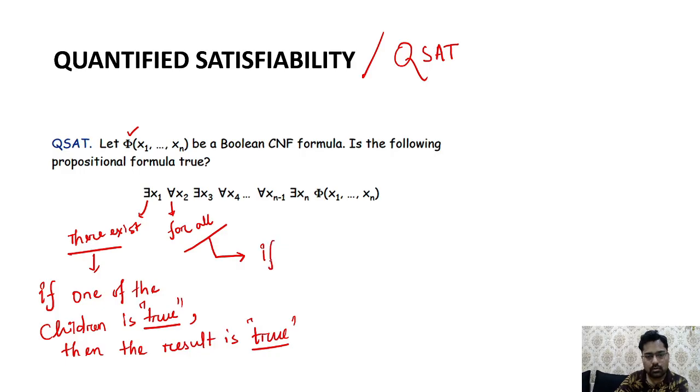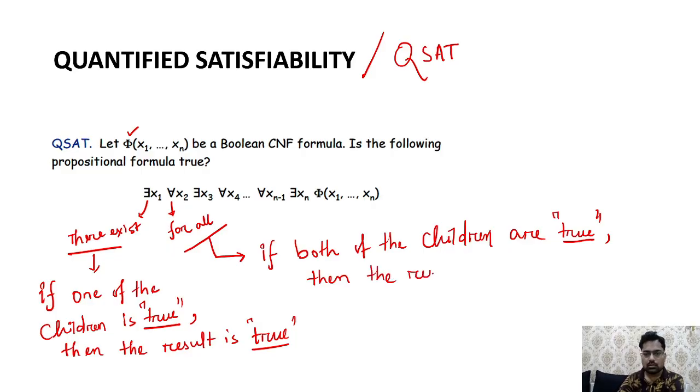For all, if both of the children are true then the result is true. So what we found, if both are true then only we can say the result will be true.